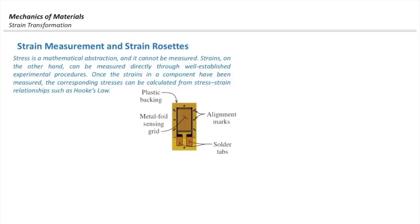One more fact about strain gauges is that there is no way for us to determine the magnitude of shear strain at a certain point — we are only able to determine normal strains. But if we want to determine the overall state of strain at a certain point, we should be able to determine the magnitude of shear strain as well. What we want to do today is put different strain gauges in different directions to determine the state of strain and state of stress using just this tool, which measures strain in one direction.